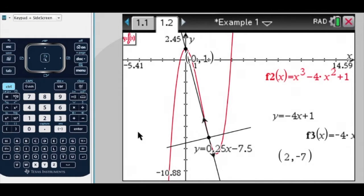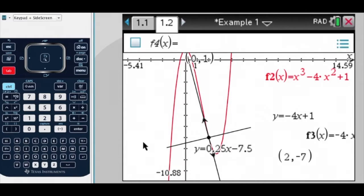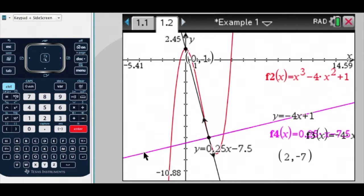I need to graph this line again to find the points of intersection, so I press Tab, and 0.25 times x minus 7.5, and this purple line is my normal, and now I want to find intersection points.